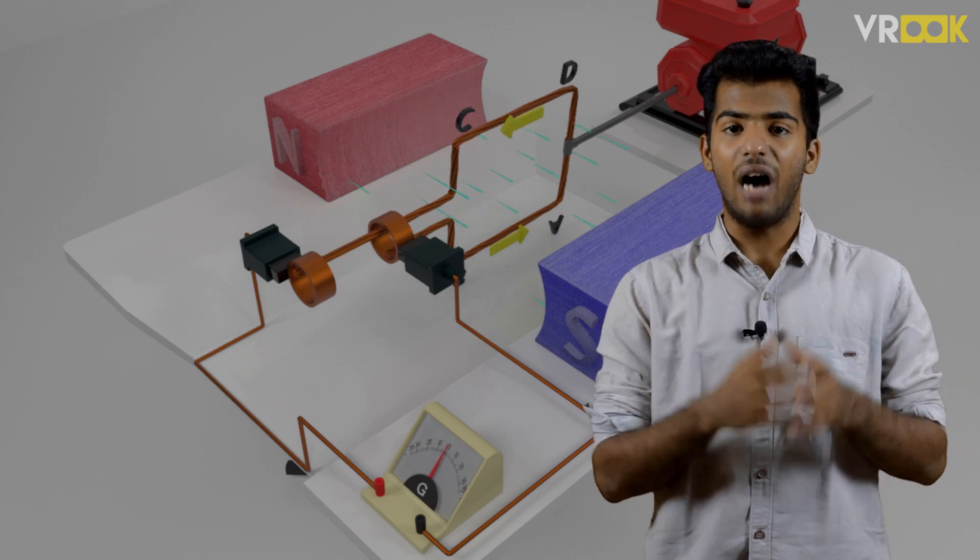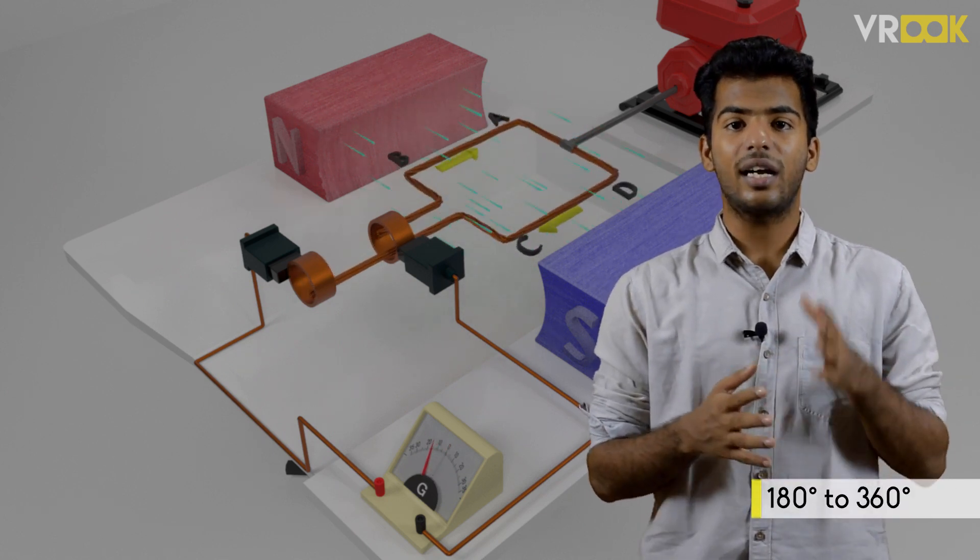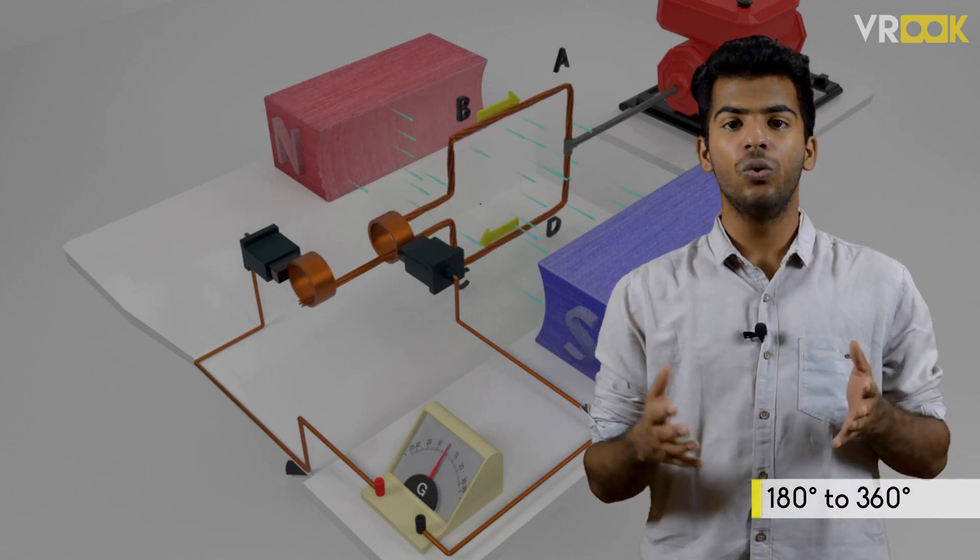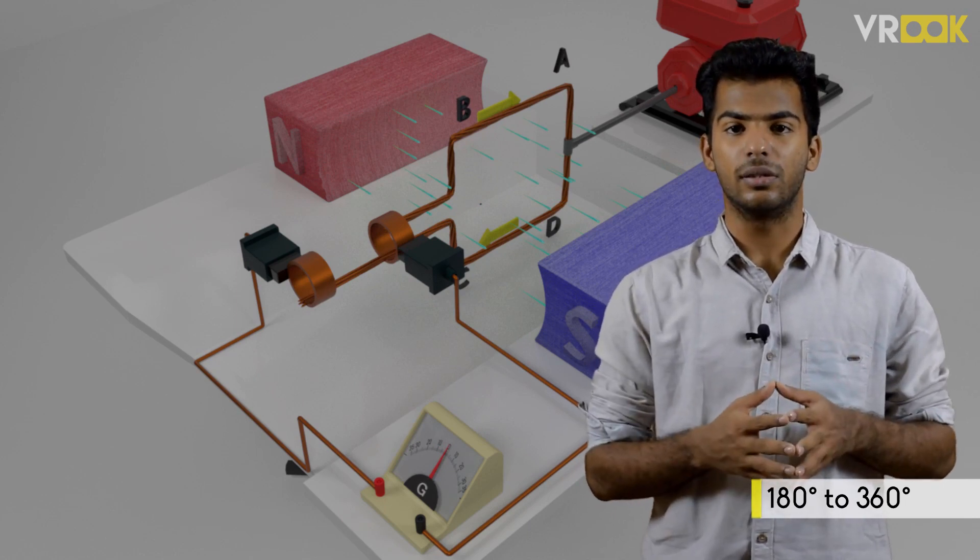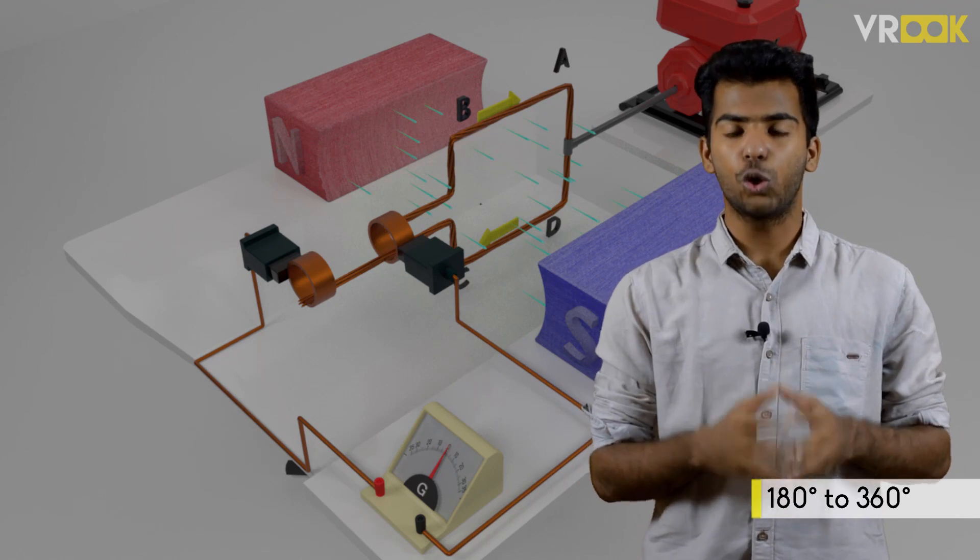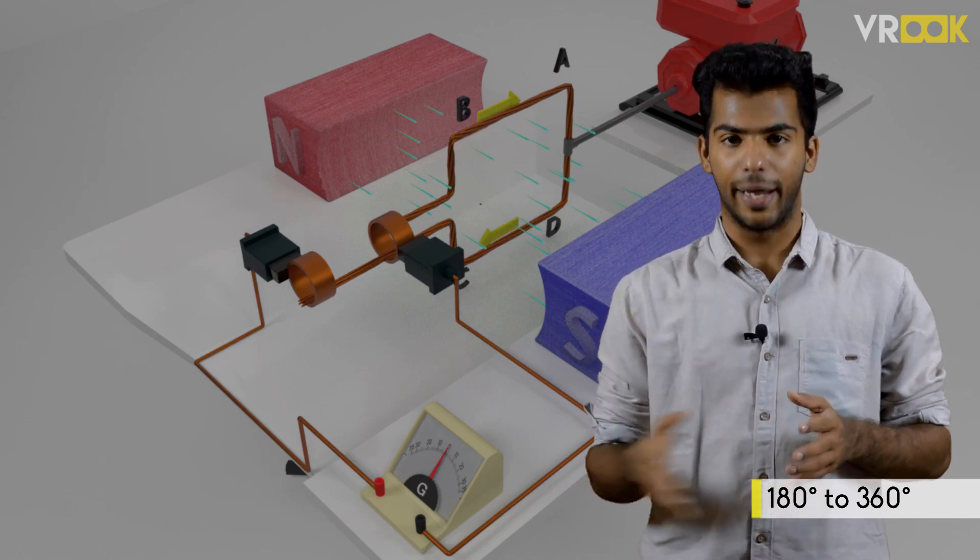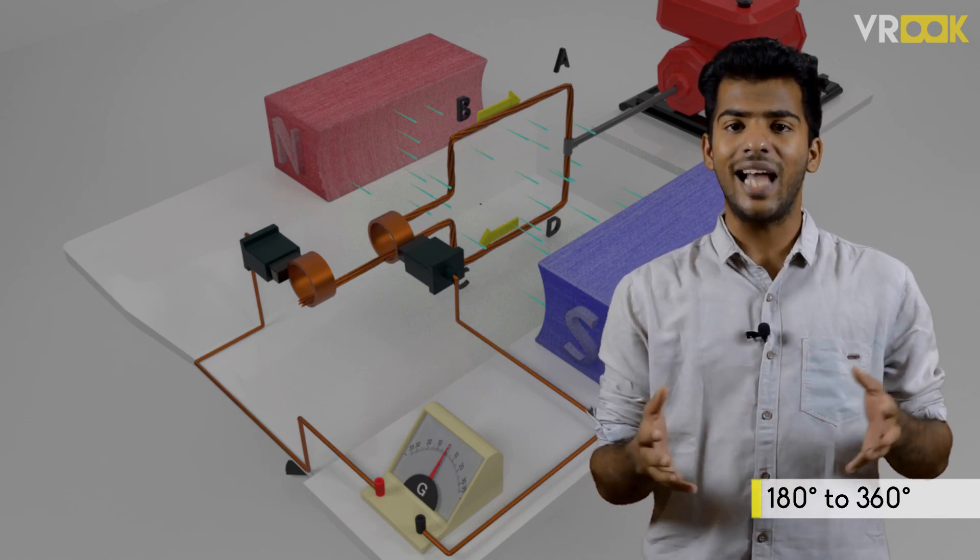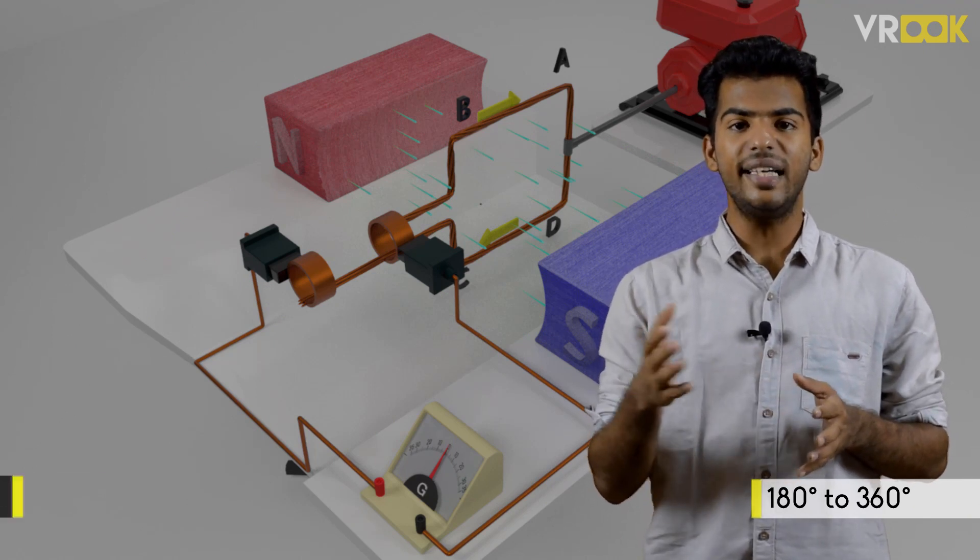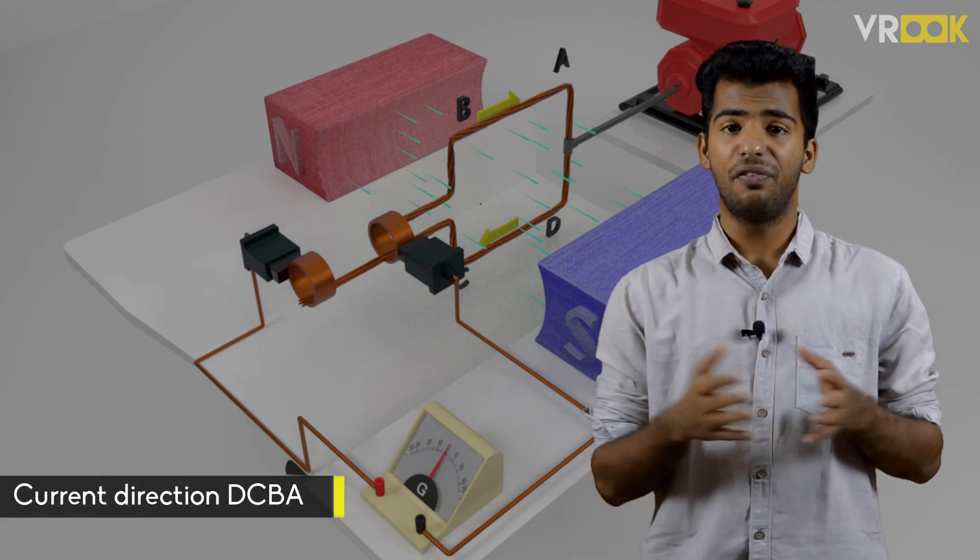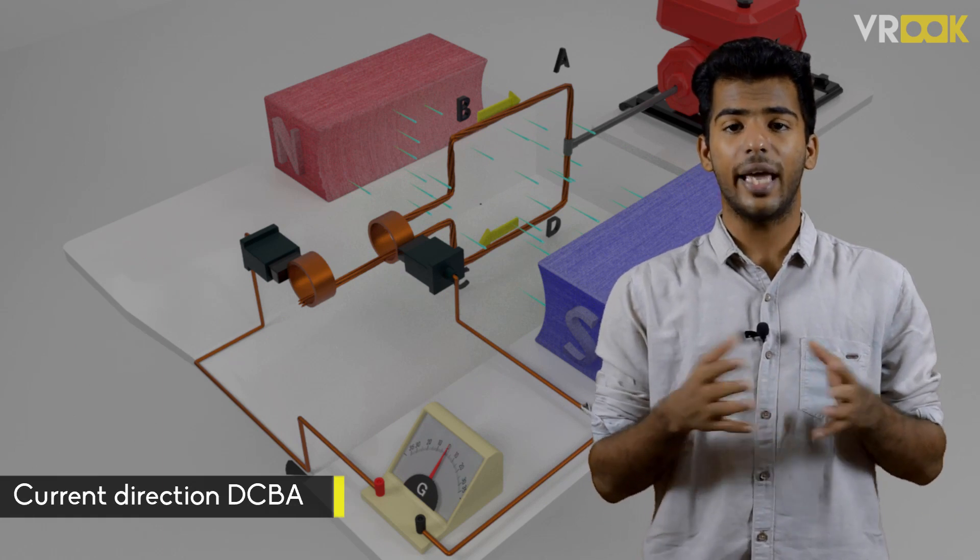But, after the 180 degree mark, the conductor AB will move in the upward direction. So, according to the principles, the current direction should be from B to A. So, in second half of the cycle, the current direction in the loop will be DCBA. In the first half of the cycle, it was ABCD.